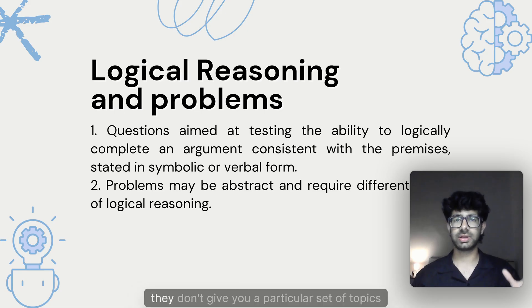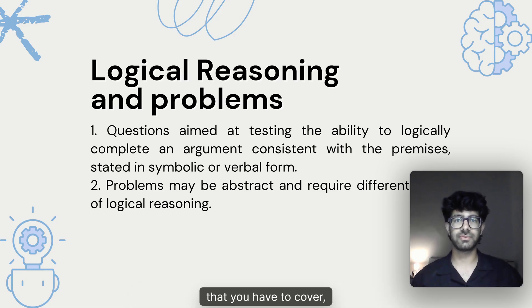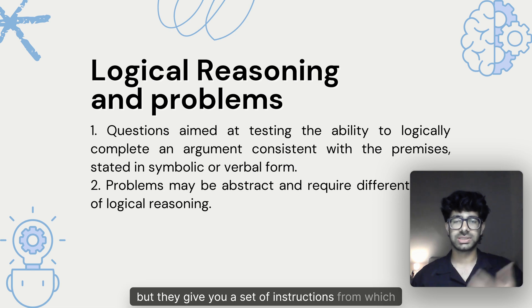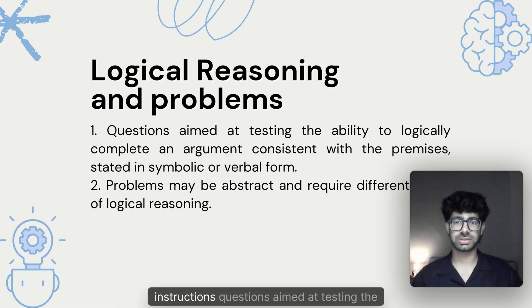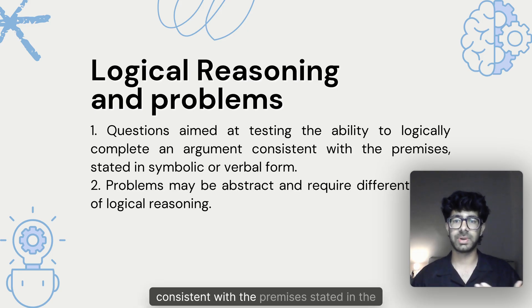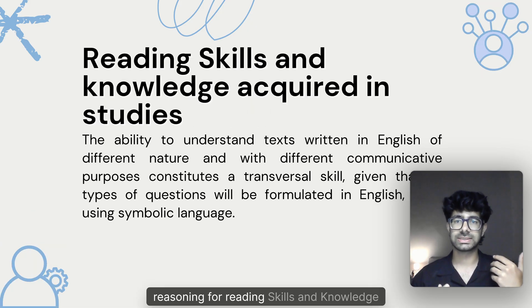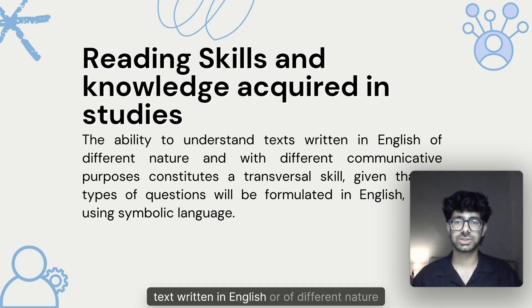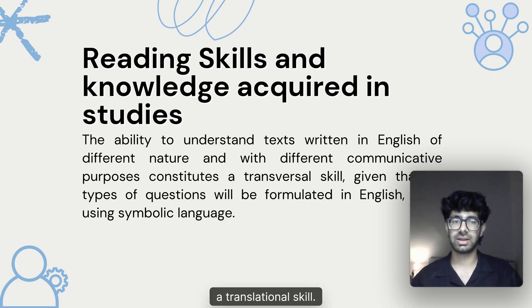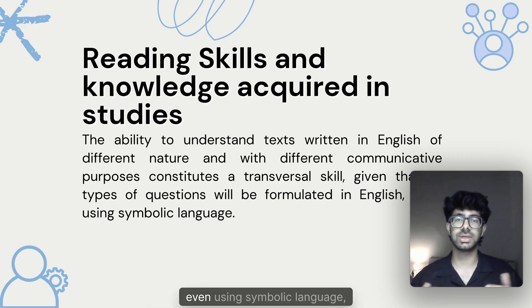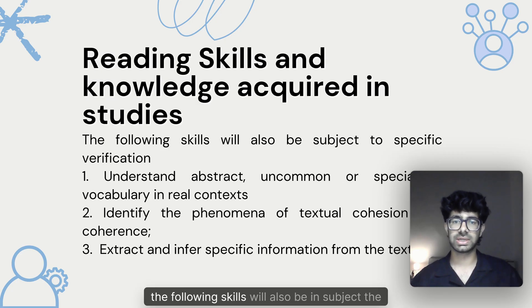For logical reasoning, MIUR doesn't give a particular set of topics but provides a set of instructions. These include: questions aimed at testing the ability to logically complete an argument consistent with the premises stated in symbolic or verbal form; problems that may be abstract and require different forms of logical reasoning; and reading skills testing the ability to understand texts written in English of different nature and communicative purpose — a translational skill, given that all questions are formulated in English.